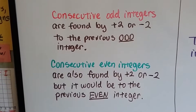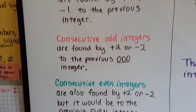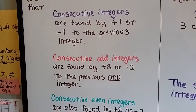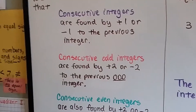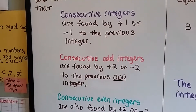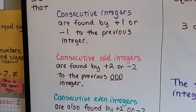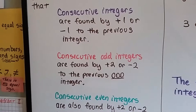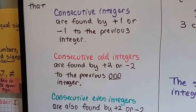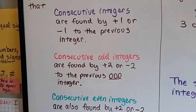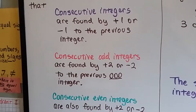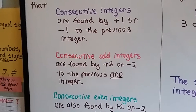The reason I'm saying plus 2, minus 2 or plus 1, minus 1 is because consecutive integers are just in order. So it could be an order going smaller or going larger.